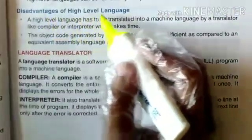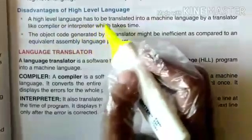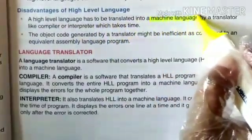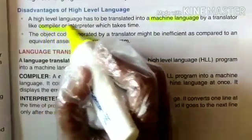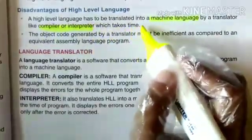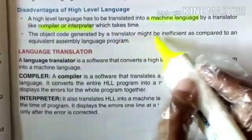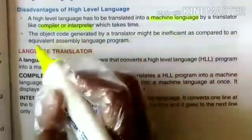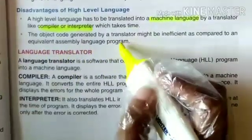Disadvantages of high-level languages: A high-level language has to be translated into machine language by a translator like a compiler or interpreter, which takes time. The object code generated by a translator might be inefficient compared to an equivalent assembly language program.